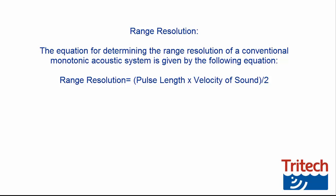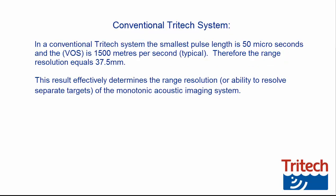The equation for determining the range resolution of a conventional monotonic acoustic system is given by the following equation. In a conventional Tritec system, the smallest pulse length is 50 microseconds, and the velocity of sound is 1500 meters per second typical. Therefore, the range resolution equals 37.5 millimeters. This result effectively determines the range resolution, or ability to resolve separate targets, of the monotonic acoustic imaging system.